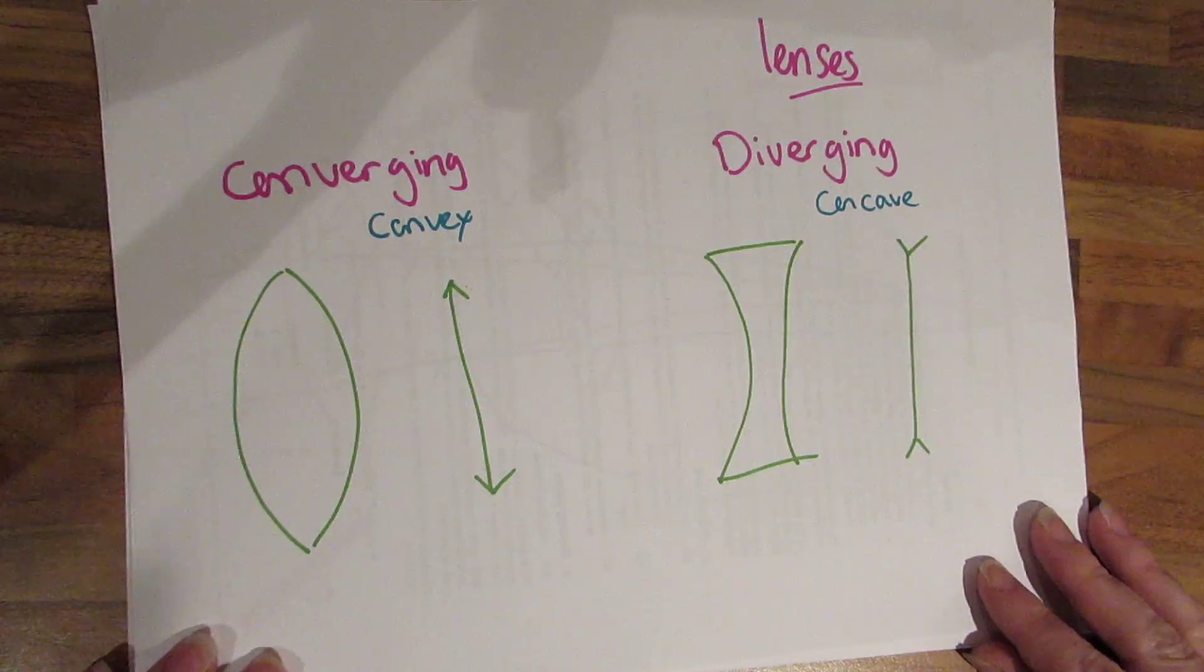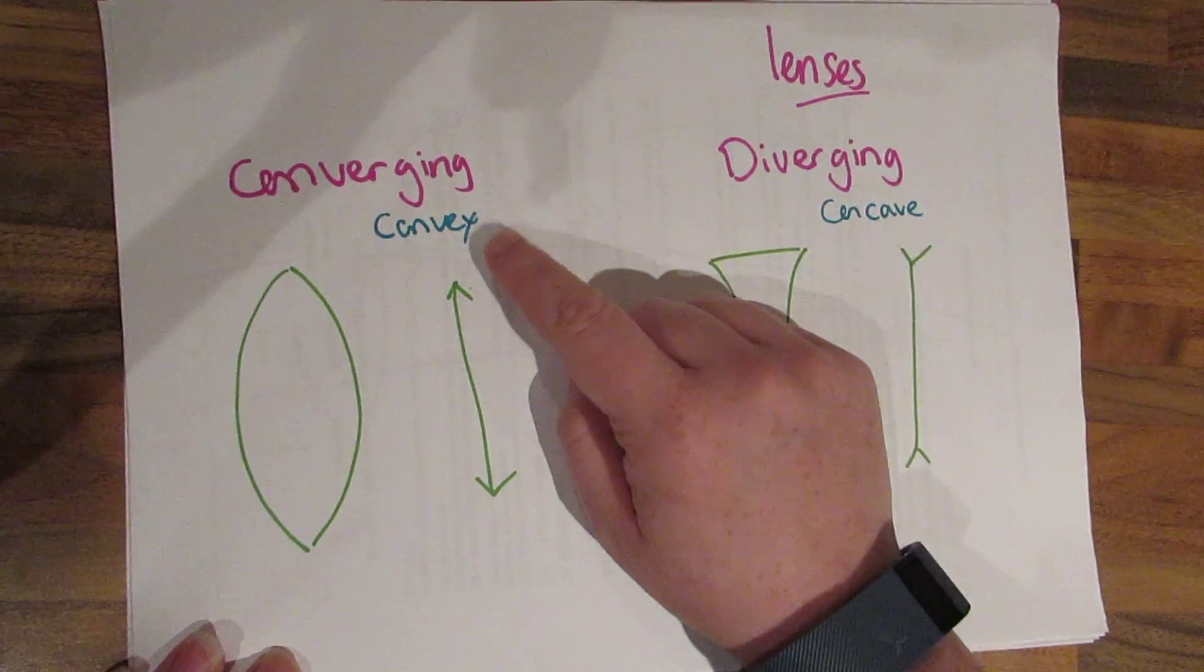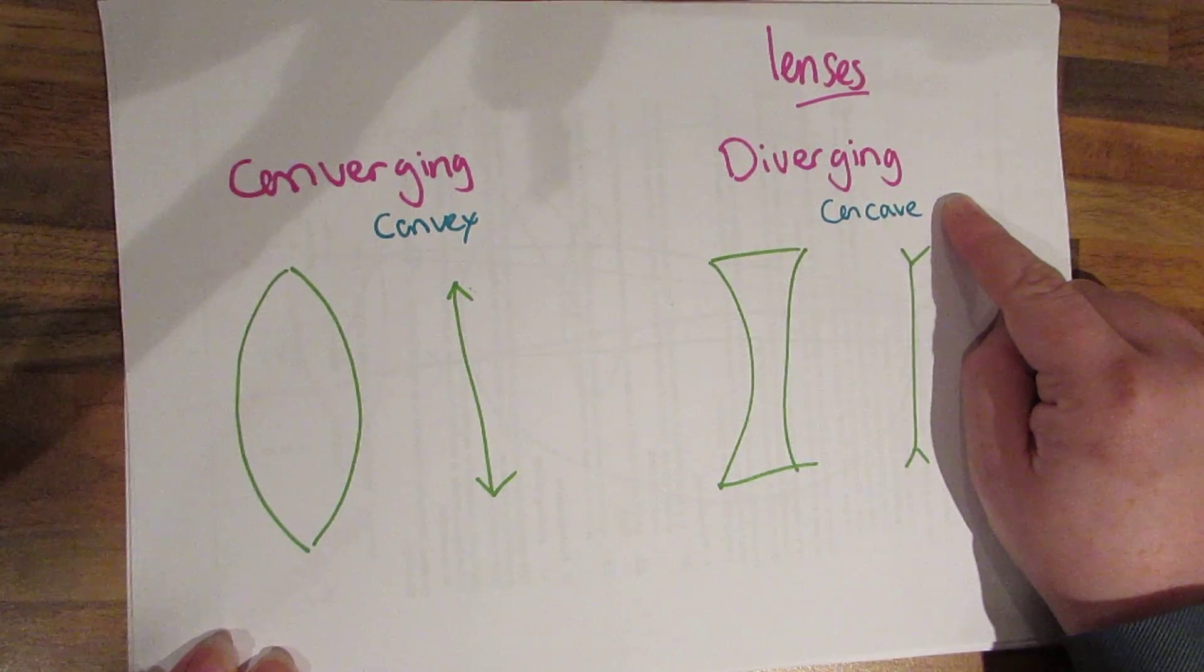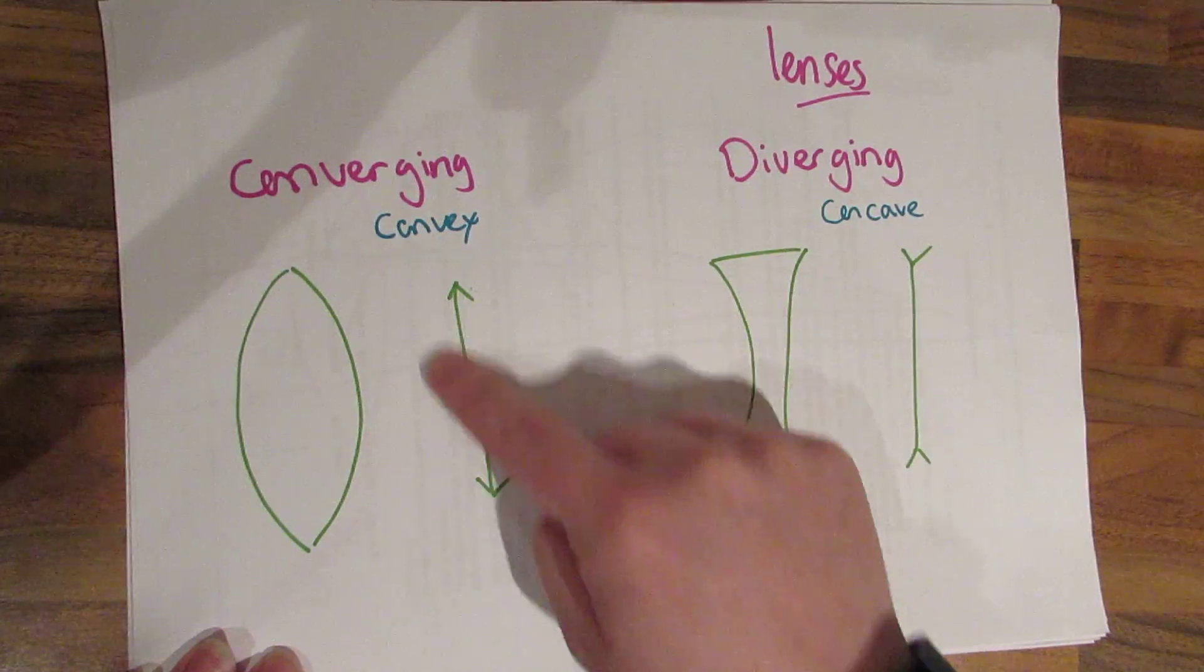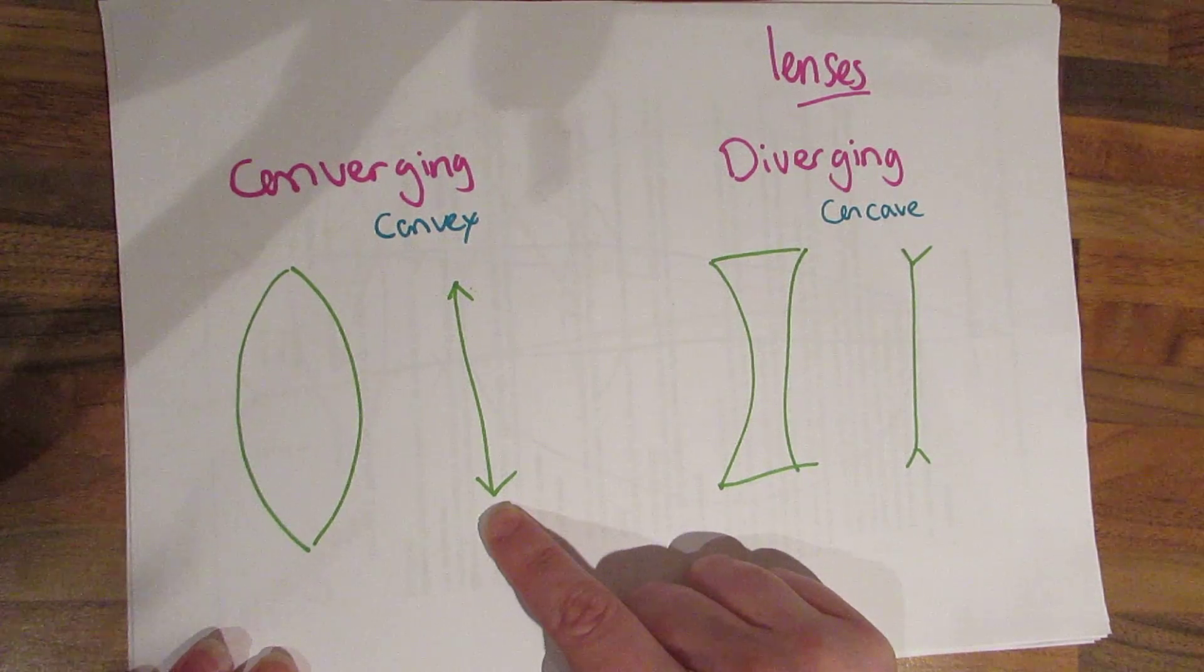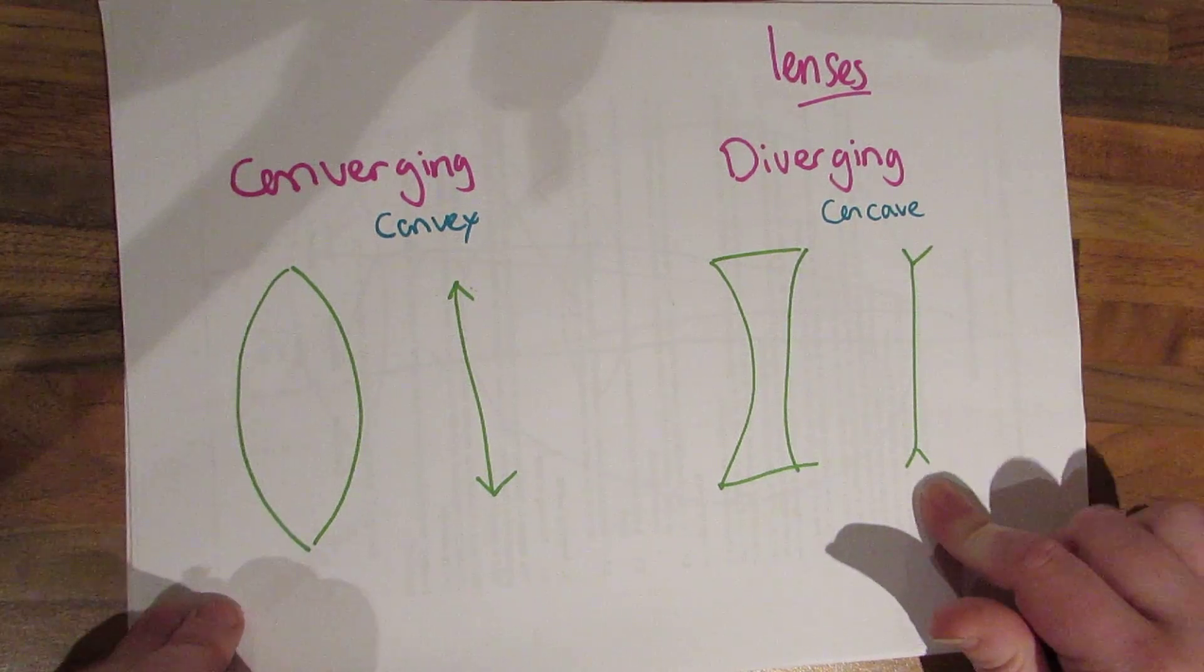So there are two types of lenses that you need to know. Converging and a diverging lens. These can also be called a convex lens and concave lens. Converging lens has this shape. Another annotation you might see for it which you should know is this. This is the shape of a diverging lens and the alternative annotation is here.